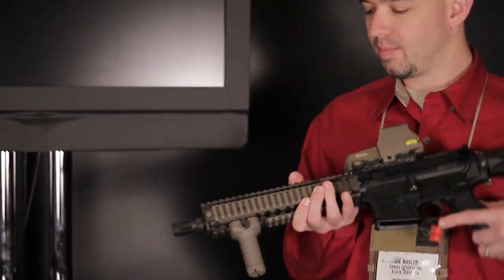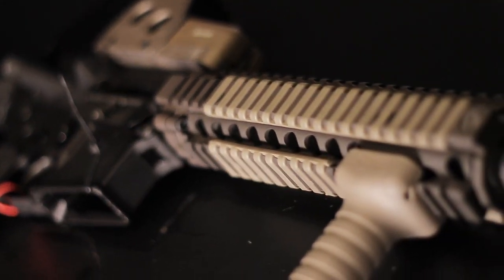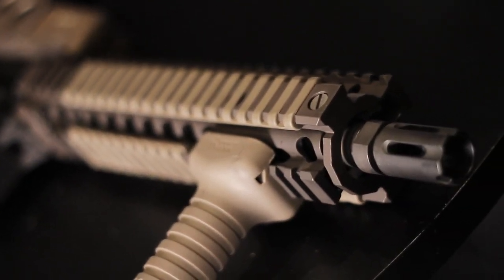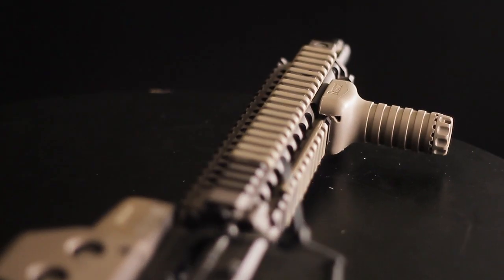This one's been around for a while. This is the Mark 18 SBR in Flat Dark Earth. This is chambered in 5.56. Very popular amongst the law enforcement community. A lot of federal agencies are carrying this rifle.